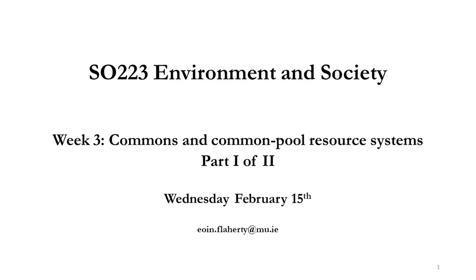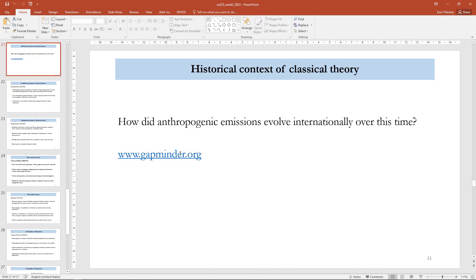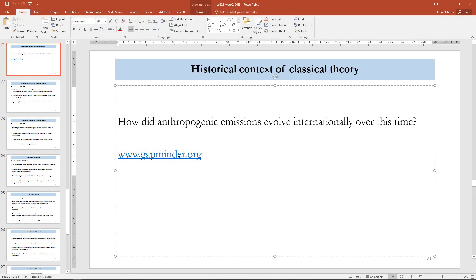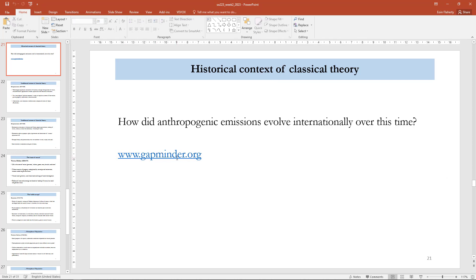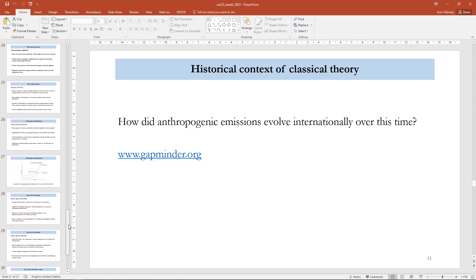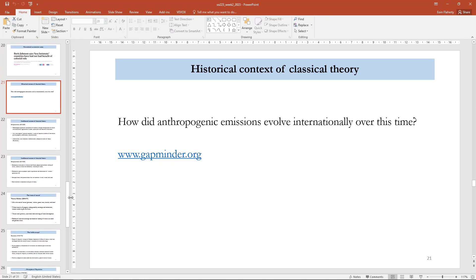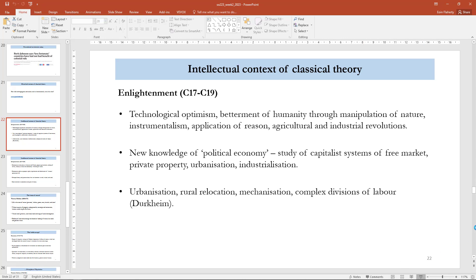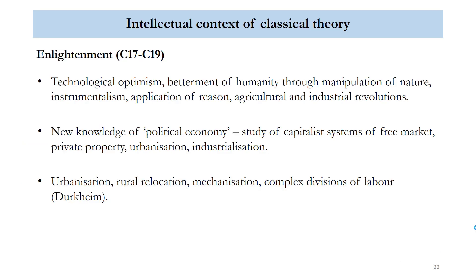Last week we looked at the evolution of anthropogenic emissions over time using this useful little tool at Gapminder, which you're welcome to explore yourselves. It contains a lot of data organized by country, region and over time concerning emissions, growth, poverty and related topics. What I want to look at today, at least to start, are some of the classical perspectives on environment, to build a link with the work you did with Sean O'Rean and classical theory in semester one.